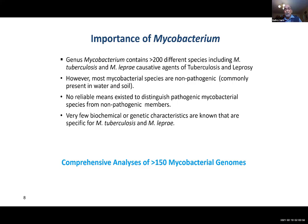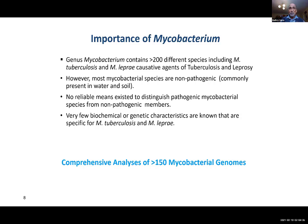Let me begin by indicating the importance of Mycobacterium. The genus Mycobacterium contains more than 200 different species, including Mycobacterium tuberculosis and leprae, which are the causative agents of tuberculosis and leprosy. However, most mycobacterial species are not pathogenic, and many are commonly found in water and soil. There were no reliable means existing until a few years ago for distinguishing pathogenic from non-pathogenic mycobacterial species, and very few molecular or genetic characteristics were known specific for disease-causing organisms like M. tuberculosis and leprae. Using available genome sequences, we carried out extensive phylogenetic and comparative genomic analysis.